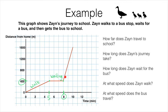Finally we've got the line going up again. This part of the graph, just like the first rising section, shows us that he is moving further away, and this corresponds to him getting the bus to school. This part of the graph is steeper than the walking section because taking the bus is faster than walking, as we're going to see later in the video.